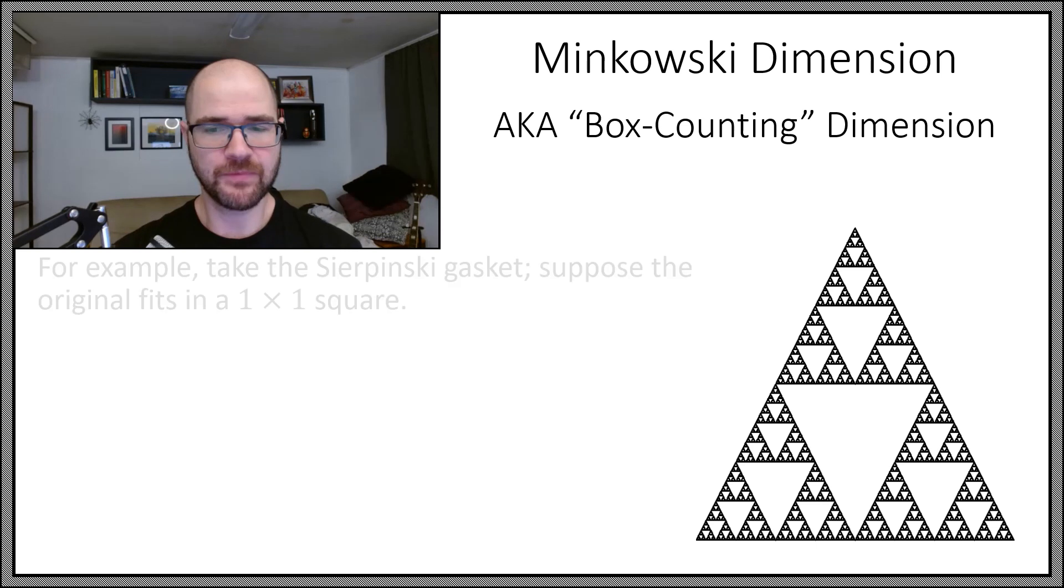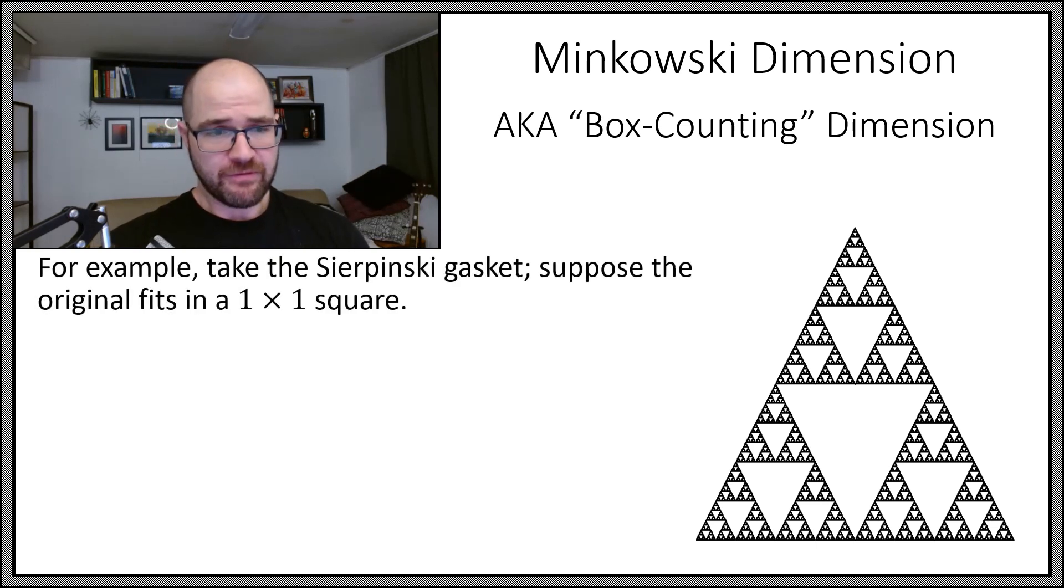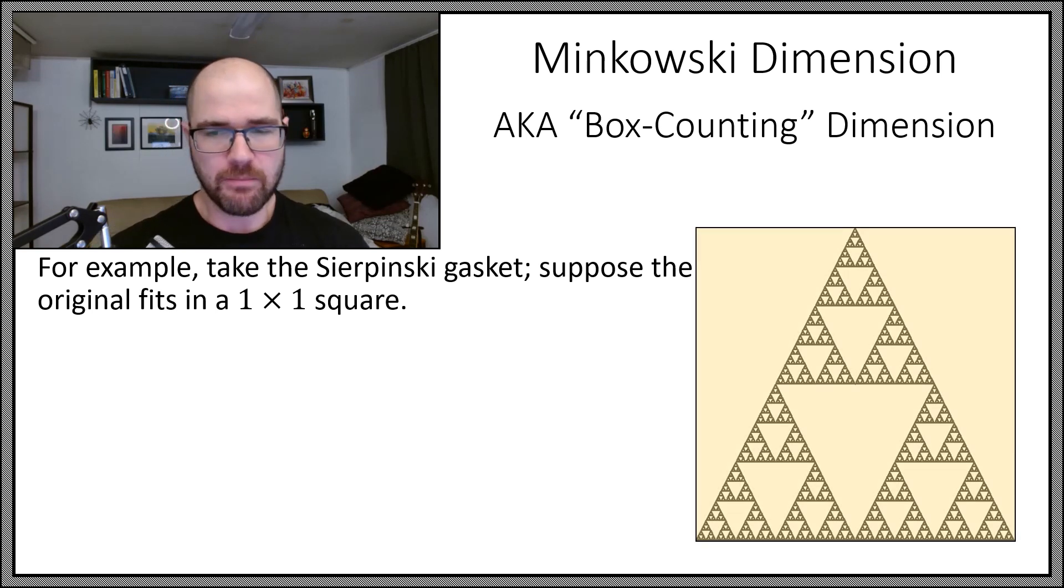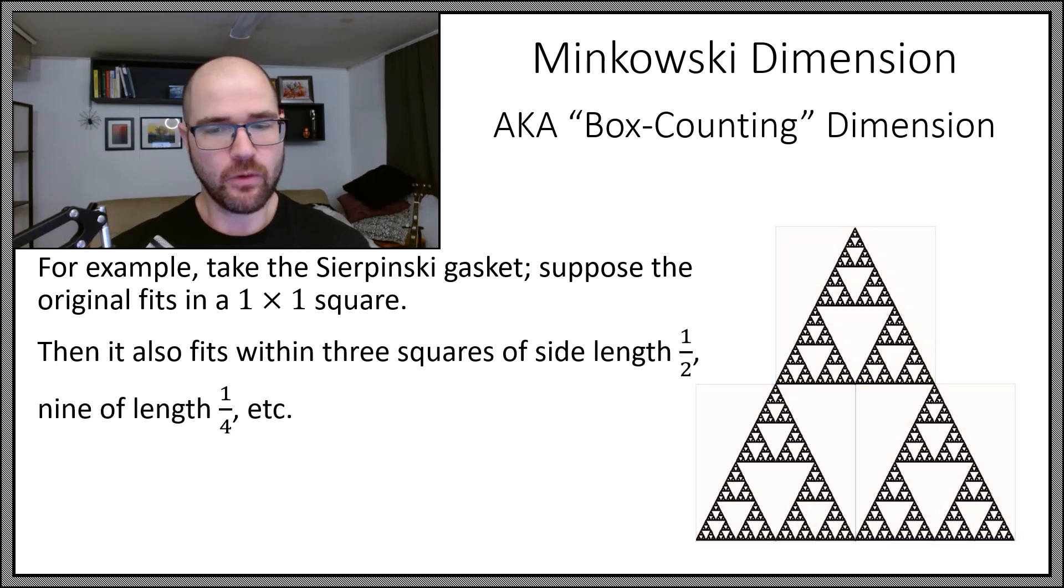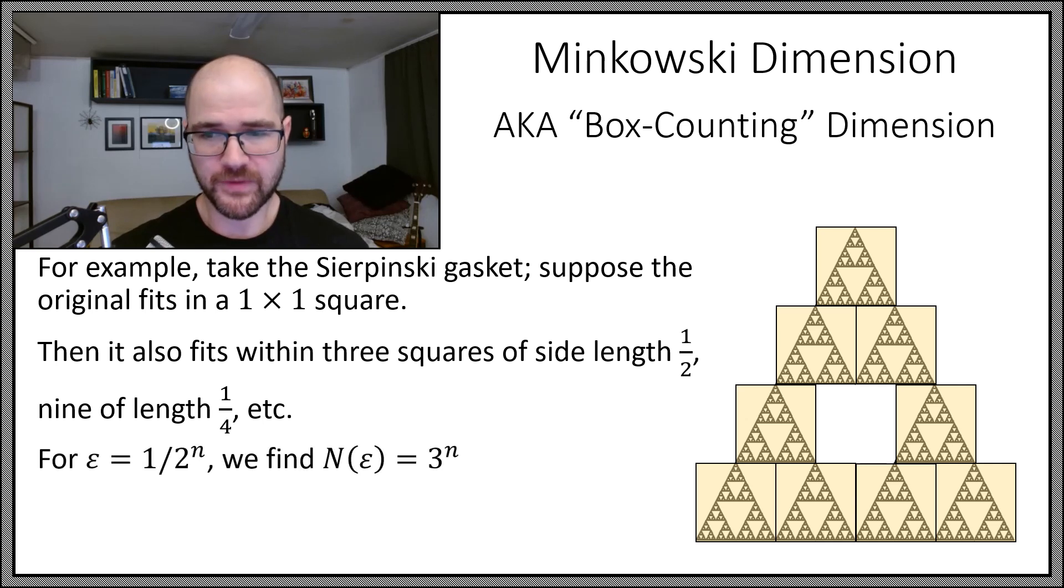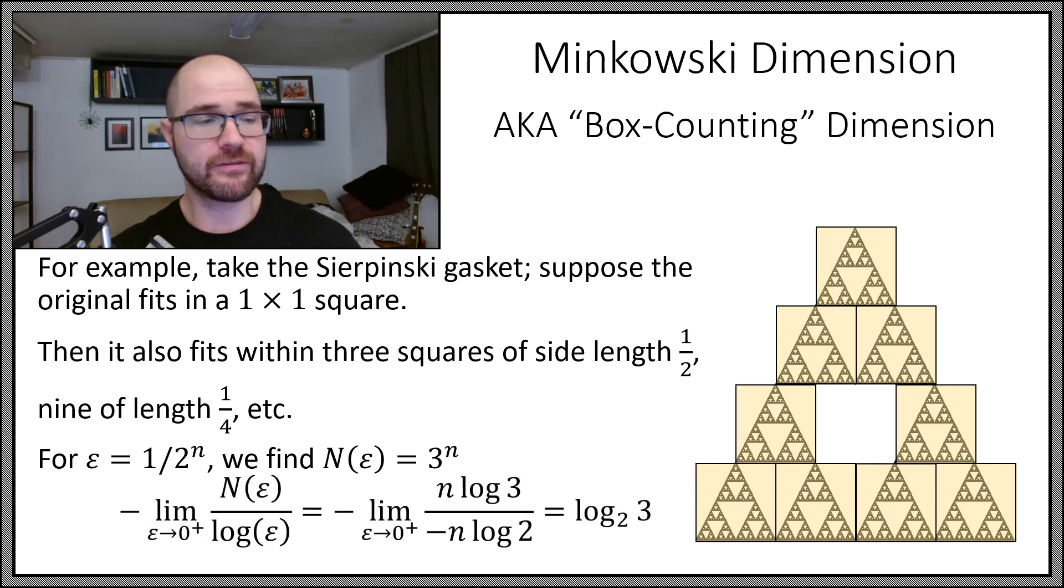So look at our Sierpinski gasket. Suppose the original happens to fit in a one by one square. It also fits in three squares of length one half, or nine of length one quarter, and so forth. So for every epsilon equals one over two to the n, one, one half, one quarter, and so forth, we found that we had to triple the number of boxes. So N of epsilon is three to the n. Now we're setting aside all possible values of epsilon and just focusing on one over two to the n. So if I just look along this subsequence of epsilons and I look at the limit as epsilon approaches zero from above of this ratio of N of epsilon over log of epsilon, then we end up with a dimension of log base two of three.